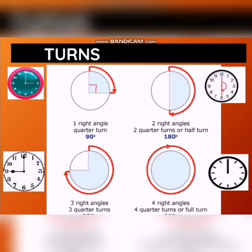The first rotation is a quarter turn. When the clock moves 15 minutes, the minute hand makes a quarter turn. It is written as 1/4. A quarter turn makes an angle of 90 degrees.